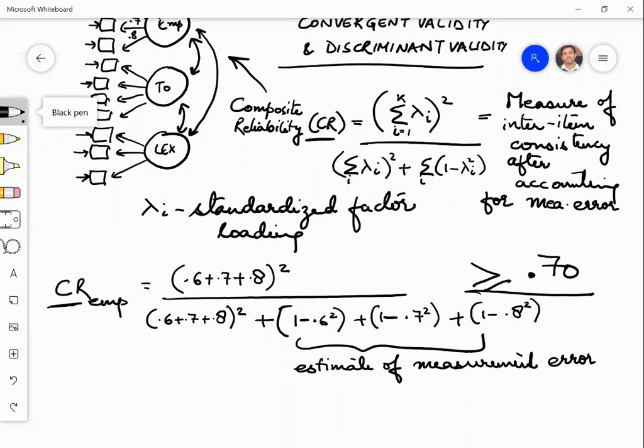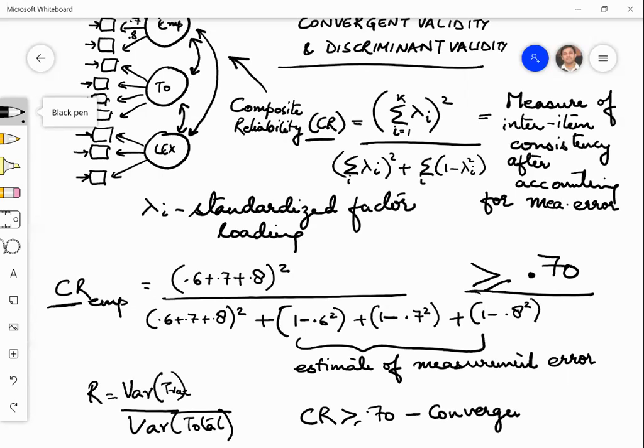This would mean that reliability we said variance of true divided by the total variance of the true divided by the variance of observed. That means there is at least 70% data, 70% of the items can be attributed to the true construct EMP. Composite reliability greater than 0.7 is a condition for convergent. That means all these items converge onto the latent factor EMP. These are adequate or right items for the latent factor EMP.